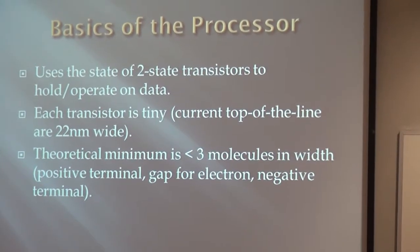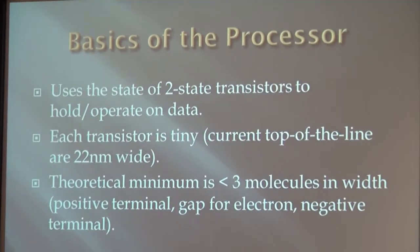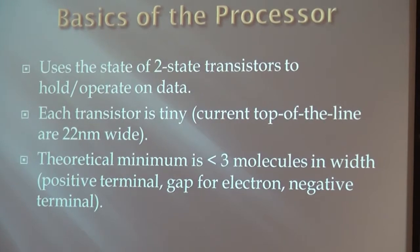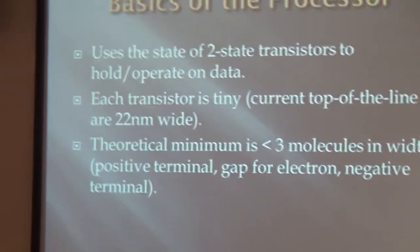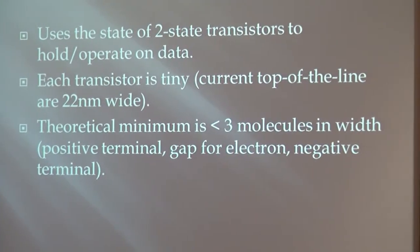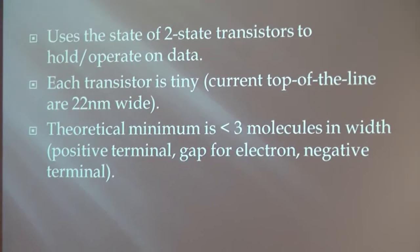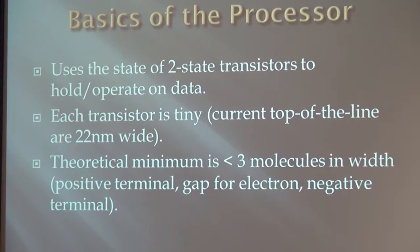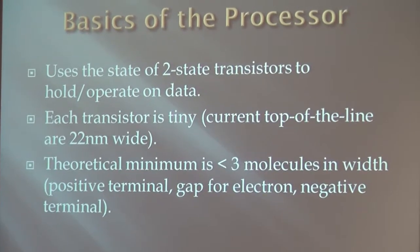The processor uses the state of a two-state transistor to hold and operate on data. Each transistor is tiny — the current top-of-the-line technology has them 22 nanometers wide each. The theoretical minimum is less than three molecules in width: one molecule for a positive terminal, one molecule for the negative terminal, and the size of an electron between them for when it has a charged reading.